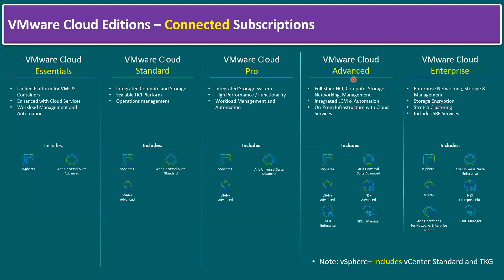VMware Cloud Advanced is almost equivalent to VCF Advanced licensing. It includes SDDC Manager, vSphere, vSAN, NSX, and the Aria Suite — the complete VCF stack. One additional component is HCX Enterprise. HCX means Hyper Converged Extension, which helps migrate workloads from on-premises to private cloud, to other clouds, or between geographic locations.